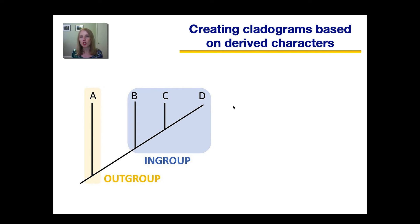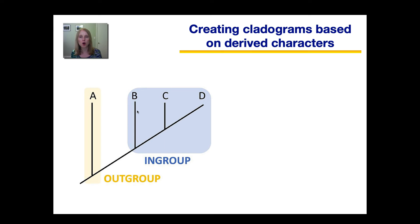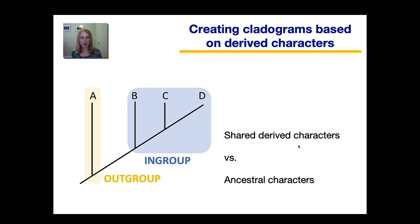Now that you know what a monophyletic group or clade means, let's talk about how to create an evolutionary tree called a cladogram. In a cladogram, all of the species you want to compare are referred to as the in-group, and they are compared against a species that's the out-group. The out-group is the one that's the most different from all of them — it's our basis of comparison. The way we figure out the cladogram is by using something called shared-derived characters.